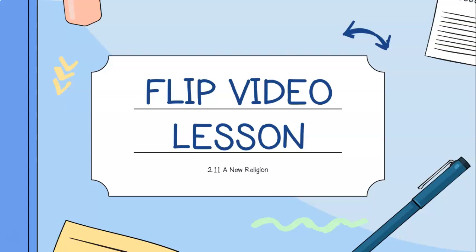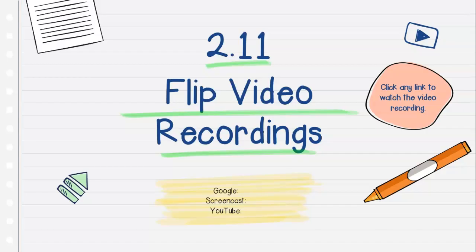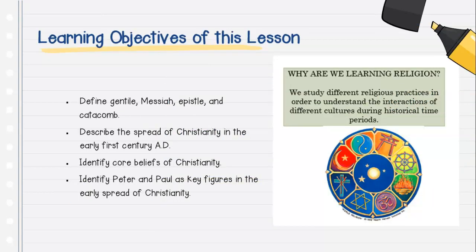Hello, and welcome to our flipped video lesson 2.11, A New Religion. Learning objectives of this lesson: define Gentile, Messiah, Epistle, and Catacomb. Describe the spread of Christianity in the early 1st century AD. Identify core beliefs of Christianity. And identify Peter and Paul as key figures in the early spread of Christianity.